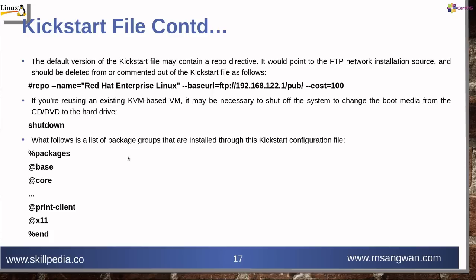The default version of the kickstart file may contain a repo directive pointing to an FTP network installation source, and it should be deleted or commented out of the kickstart file — for example: repo --name=redhat-enterprise-linux --baseurl=[url] sets the priority. If using an existing KVM-based VM, it may be necessary to shut off the system to change the boot media from CD/DVD to the hard drive. Then the package list begins with %packages.